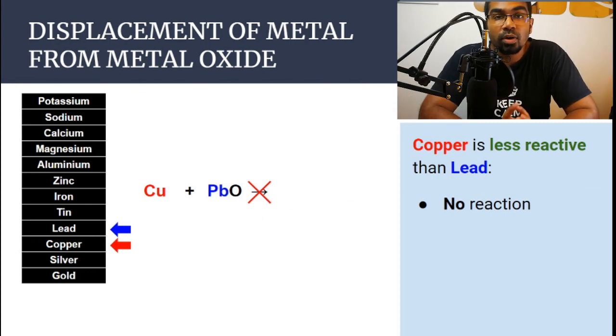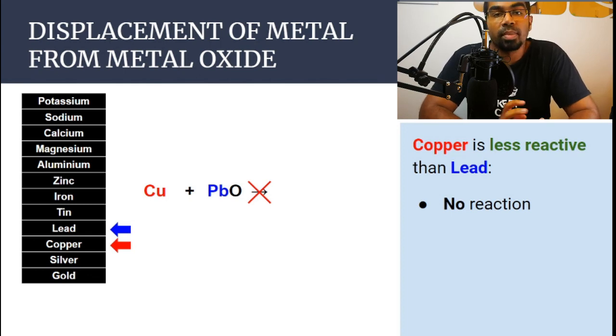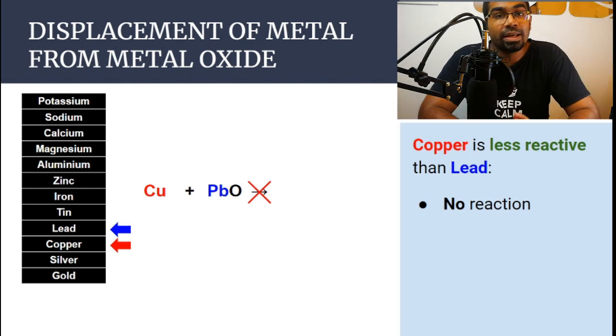This is how metals react with oxygen and how we use the reactivity series of metals to predict how their reaction with oxygen will be, and also whether a metal will be able to displace another metal from a metal oxide. Next we'll be looking at the positions of carbon and hydrogen in the reactivity series of metals. That's it for this video — if you've learned something, please don't forget to hit the like button, and if you haven't subscribed yet, please do subscribe. I'll see you in the next video.